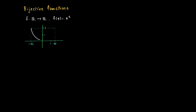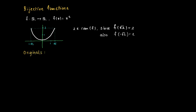In this clip I will focus on bijective functions, which are functions for which the domain has a special relation to the range. Consider f(x) = x²: the value 2 is in the image of the function, it belongs to the range of f, because f(√2) = 2 and also f(−√2) = 2. We call √2 and −√2 the originals of 2 with respect to f.